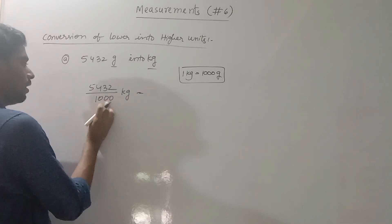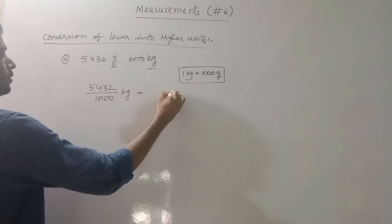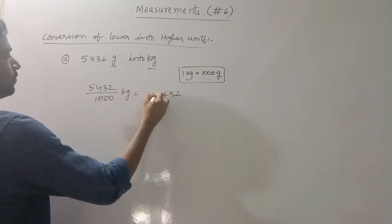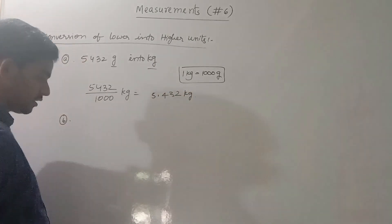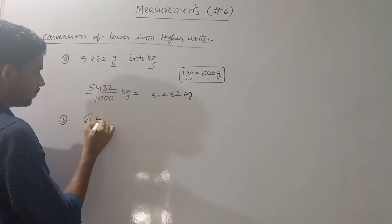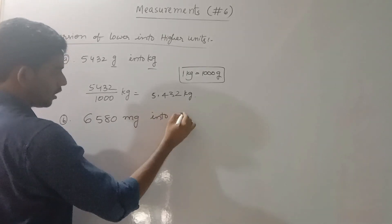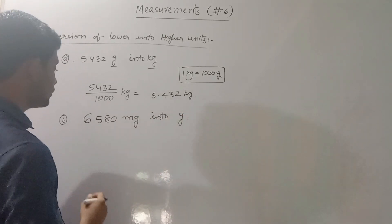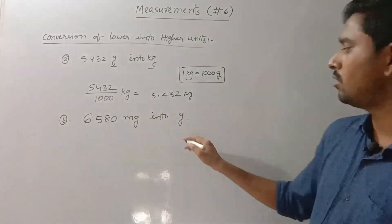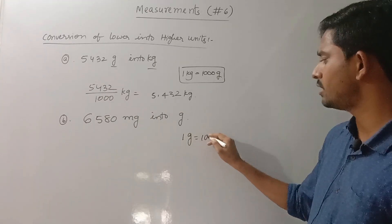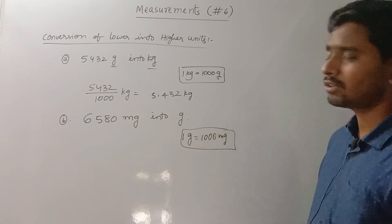Now we have 3 decimal places — 1, 2, 3 — so we move the decimal point 3 places. For example, 6,580 milligrams into grams. In general, 1 gram is 1,000 milligrams. So to convert milligrams to grams, we divide by 1,000.